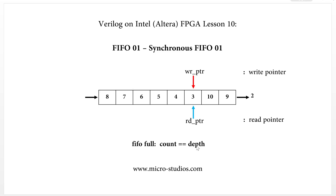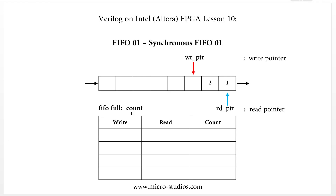There is a write action and a read action for the FIFO. What is the relationship between write, read, and the count? Let's take a look at this chart. This is the write action, this is the read action, and this is the count value representing how many data items are in the FIFO.